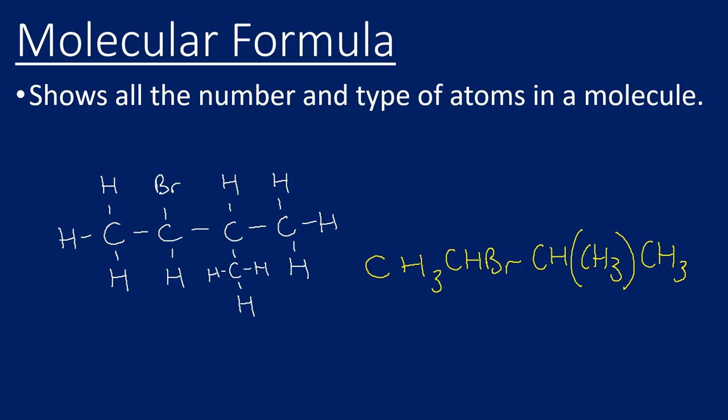Let's start with a definition for the molecular formula. The molecular formula just shows us the number and type of atoms, doesn't give us any information about the structure. The molecular formula of both of these molecules here is C5H11Br. That's just telling us there are five carbon atoms, 11 hydrogen atoms, and one bromine atom. It doesn't show us anything about the structure.